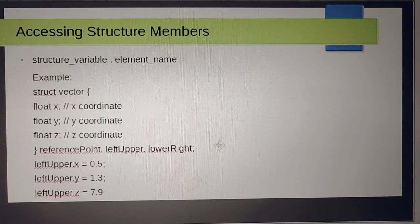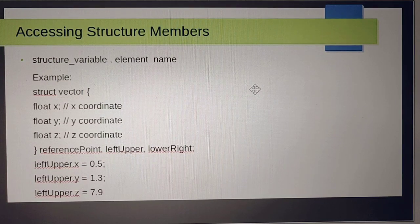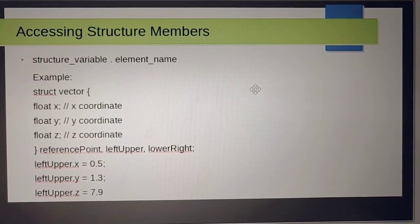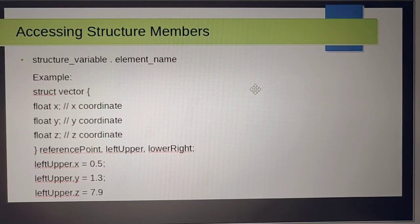If we try to visualize, it will create three float values in the structure—x, y, and z—and assign them respective values of x, y, z: that is 0.5, 1.3, and 7.9.